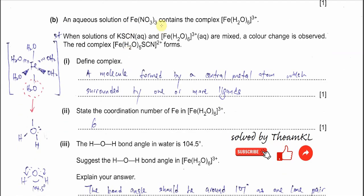Part B: an aqueous solution of Fe(NO₃)₃ contains the hexaaquairon(III) complex ion. When potassium thiocyanate (KSCN) and the hexaaquairon(III) solution are mixed, a colour change is observed and a red complex ion forms. Part B1: define a complex. A complex is a molecule or ion formed by a central metal atom or ion surrounded by one or more ligands. In this case, the iron ion is surrounded by six water ligands.